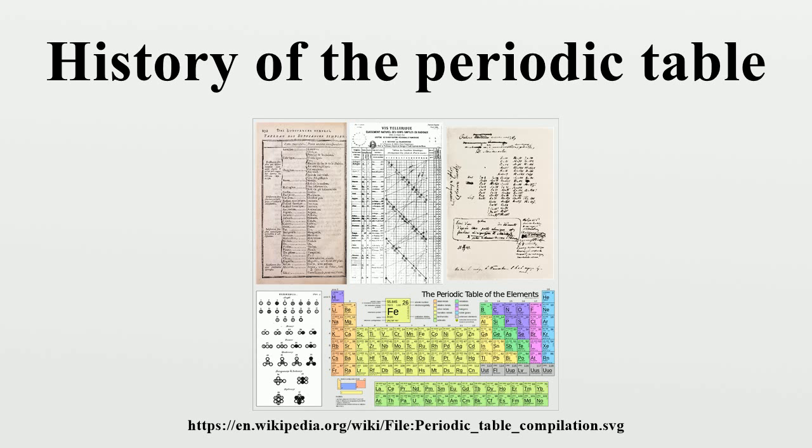William Odling in 1864. The English chemist William Odling also drew up a table that was remarkably similar to the table produced by Mendeleev. Odling overcame the tellurium-iodine problem and even managed to get thallium, lead, mercury and platinum into the right groups, which is something that Mendeleev failed to do at his first attempt.